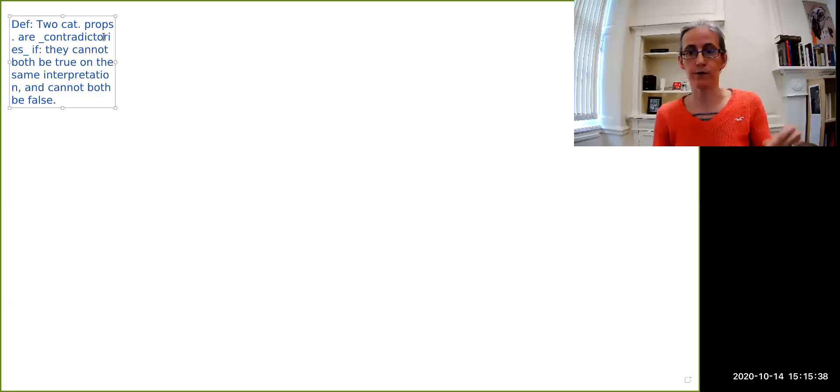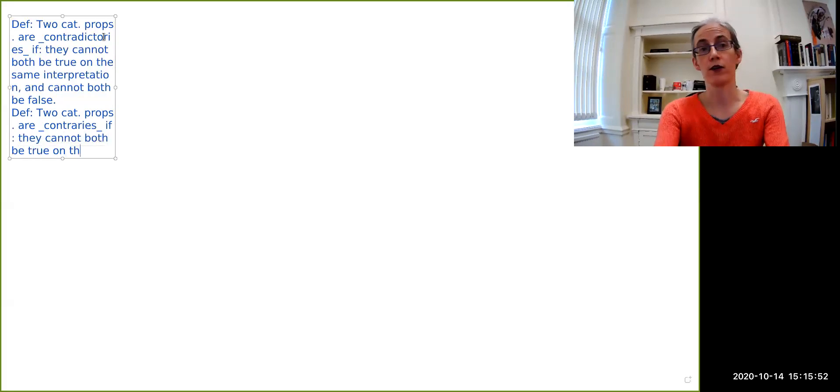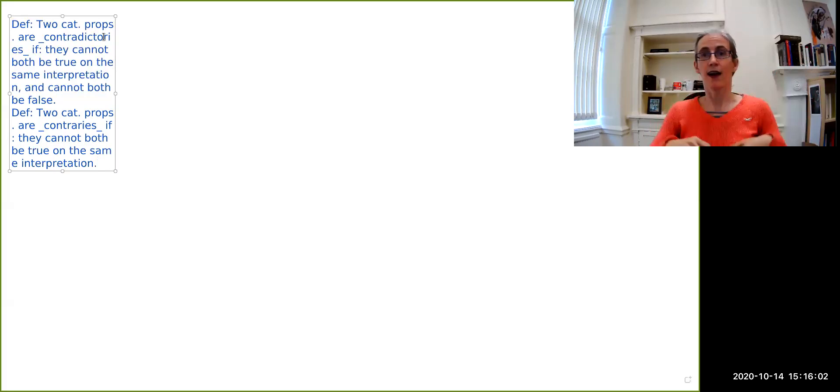That's the first notion, contradictory pairs. The second is that two categorical propositions are contraries if they cannot both be true on the same interpretation. So this is, as you can see, a weaker notion than the notion of contradictory. This is because contradictory has two conditions it has to meet. Contraries only have the one.